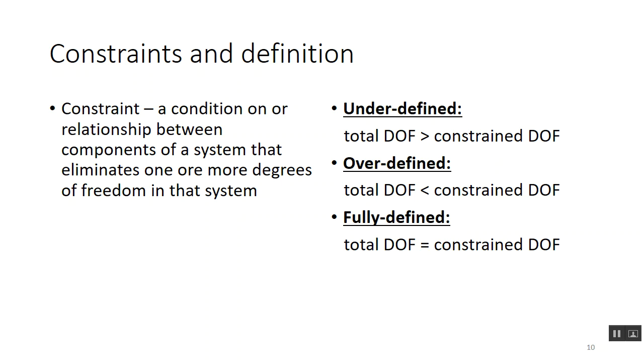Formally, a constraint is a condition on or a relationship between components of a system that eliminates degrees of freedom. If you have a line with two points and you fix one side, you eliminate one degree of freedom. That's what we call underdefined — the total degrees of freedom are greater than the constrained degrees of freedom. If it's overdefined, there's no real solution. If it's fully defined, the constraints equal the total degrees of freedom.